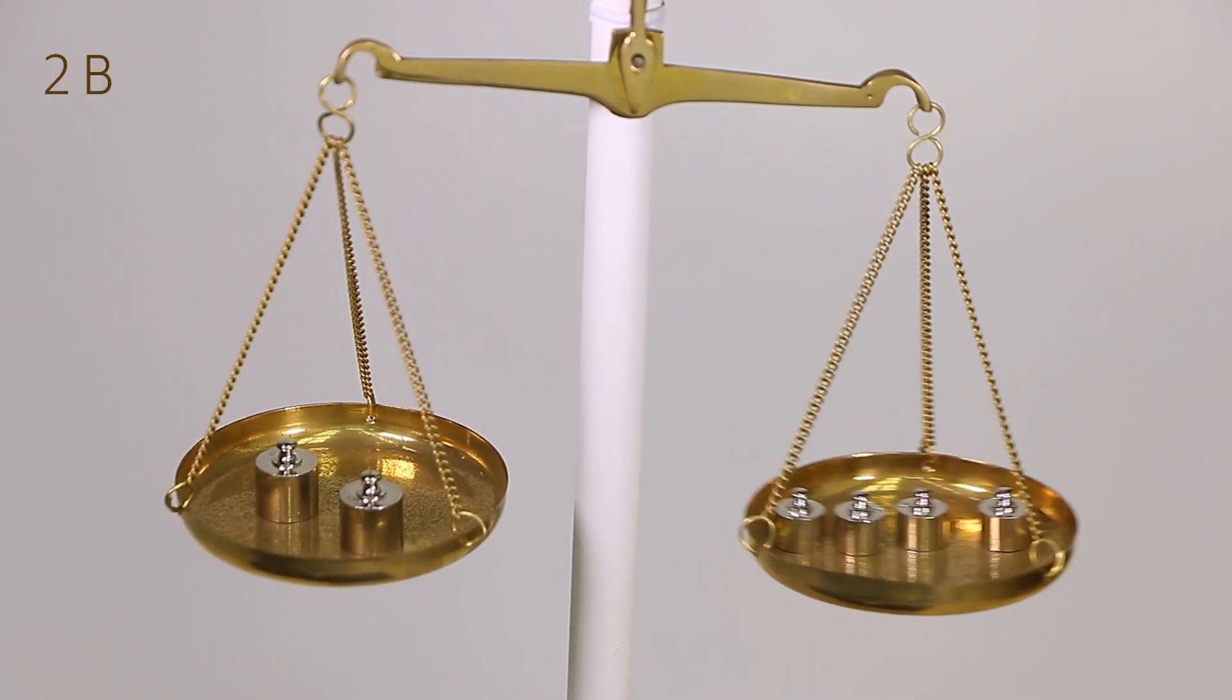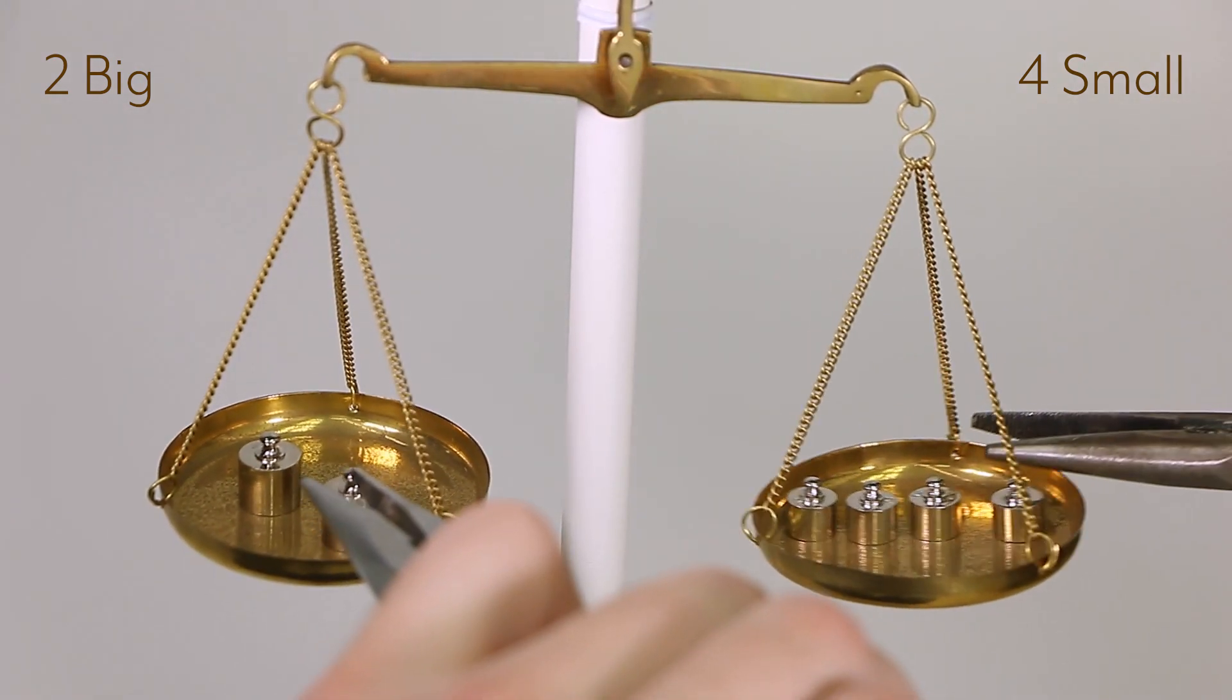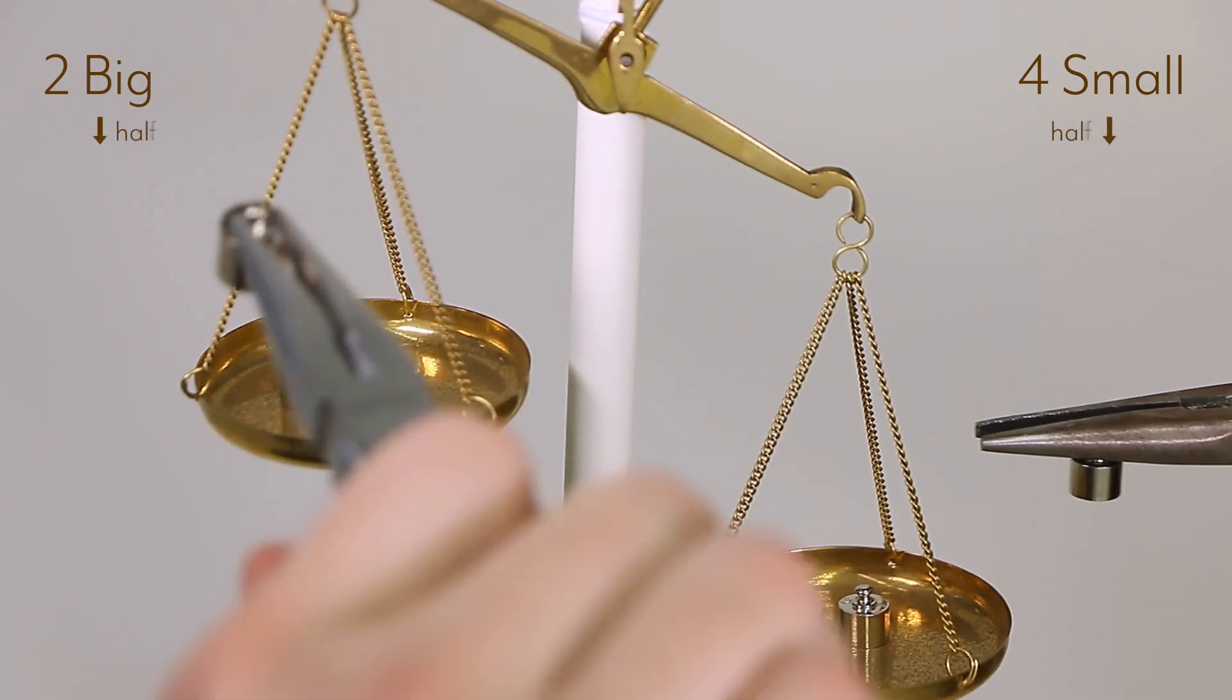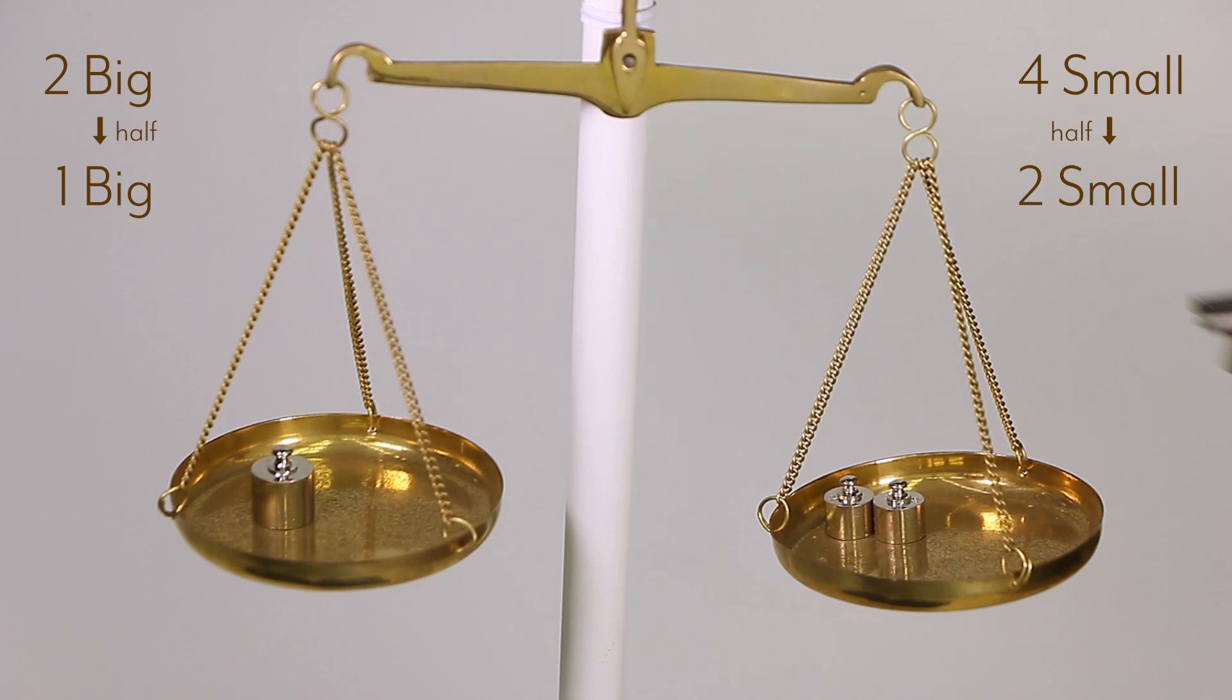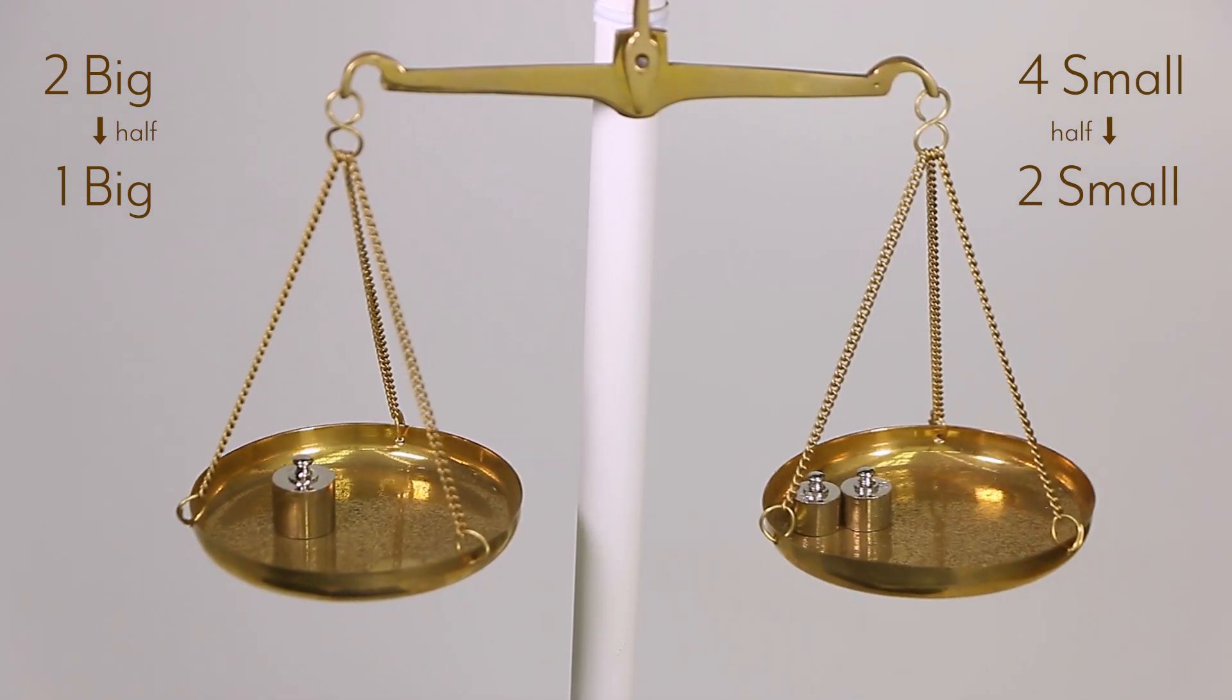Let's look at the physical scales again. I have two groups of masses that weigh the same overall. If I cut both groups in half, then it remains in balance. This makes intuitive sense, but also a physical sense.